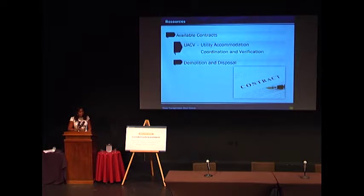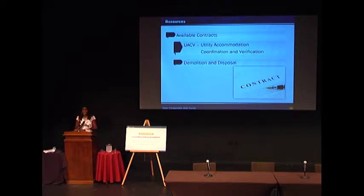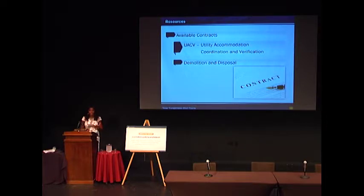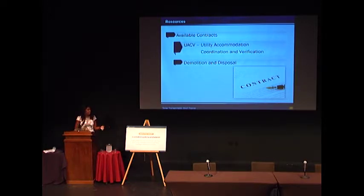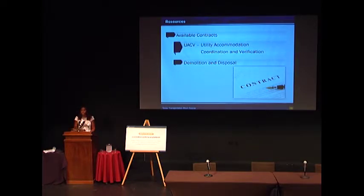Another resource we have available is the use of demolition and disposal contracts. The expectation is still for utility companies to go out and clear the right-of-way in preparation for their relocations, but there may be instances where you have a need to expedite this activity. One example is where you have a project with all non-reimbursable utilities — what utility is going to raise their hand to be the first to bear the cost of clearing the right-of-way and let all the others benefit from it? So when you have those types of instances, use the demolition and disposal contracts so that we can have the right-of-way clear for the utilities to move.